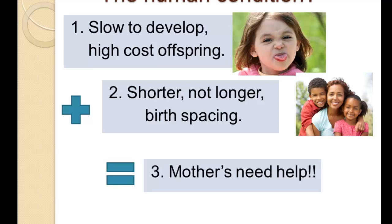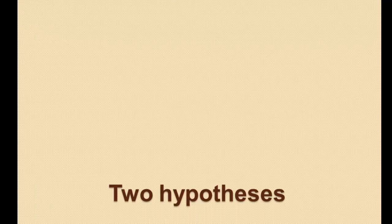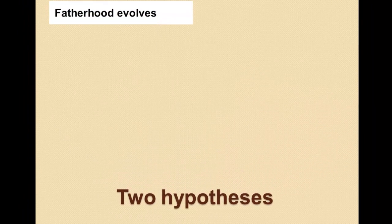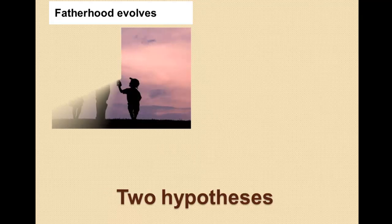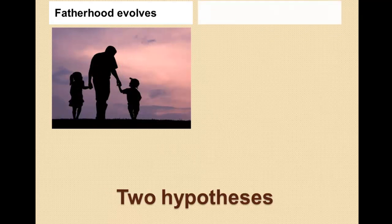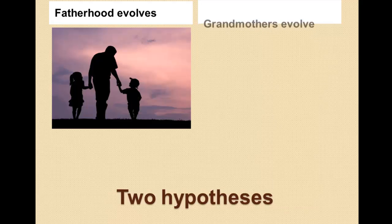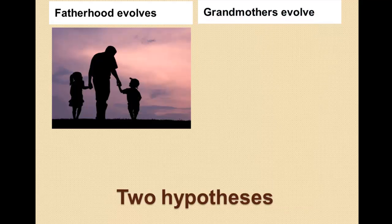That is Sarah Hrdy's principle that mothers need help. If birth spacing is getting shorter but the cost of offspring is getting higher, mothers need help. There have been two key hypotheses about where that help comes from: the first focuses on fatherhood and the evolution of fatherhood; the second focuses on grandmothers, which is the focus of Sarah Hrdy's book.